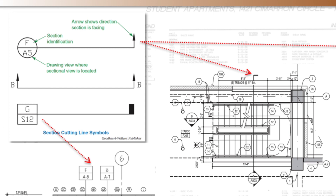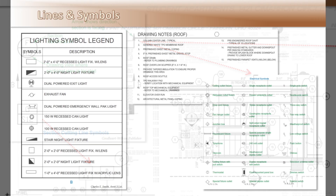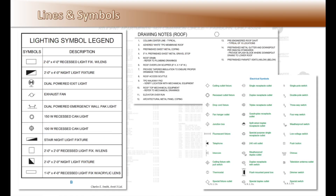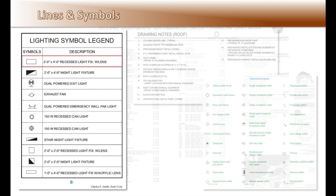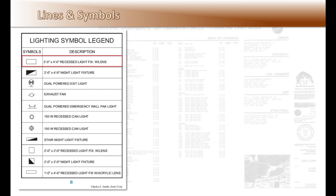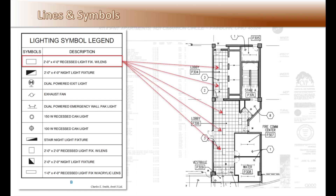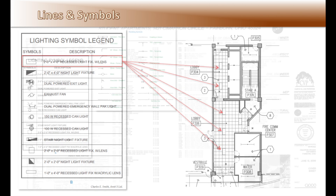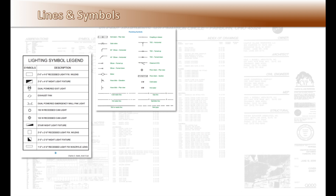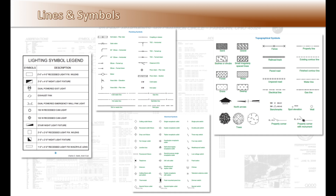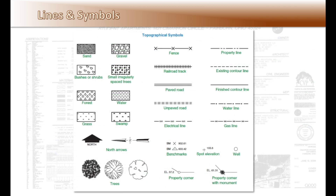The top letter on a section cutting line indicates the section cut and the bottom number indicates the page on which the section can be found. On large projects, there will be hundreds and maybe even thousands of details. In addition to various types of lines, an extensive amount of symbols are used in construction drawings. These symbols represent items, products, and references to notes. An example would be a designer using a recessed light fixture symbol to indicate lights in a corridor. There are many types of symbols for all the different trades: lighting, plumbing, electrical, and site landscaping plans.